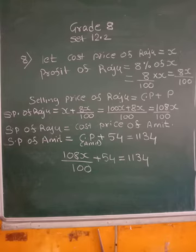Raju sold a bike to Amit at 8% profit. Amit repaired it spending Rs. 54. Then he sold the bicycle to Nikhil for Rs. 1134 with no loss and no profit. Find the cost price of the bicycle for which Raju purchased it.